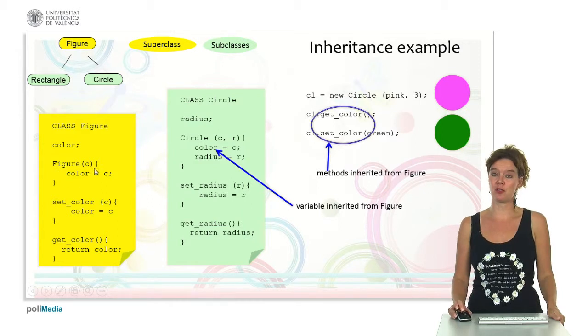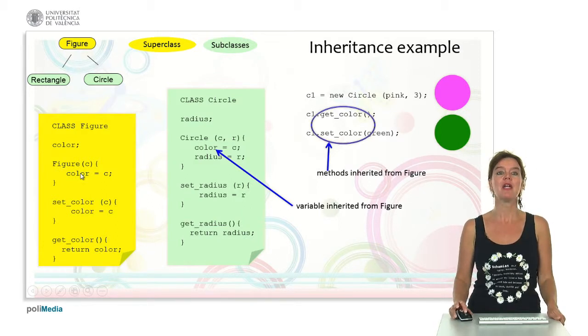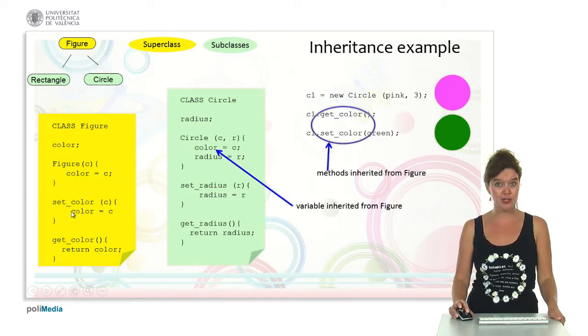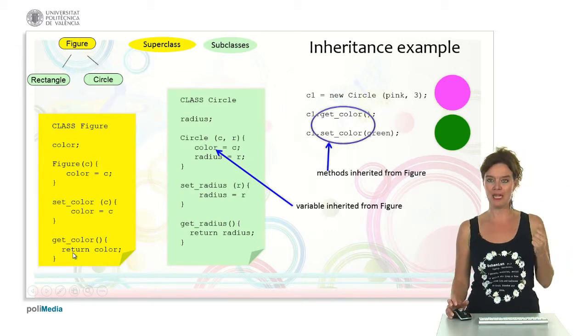So here we have a constructor. It enables to construct a figure with a specific color. And here we have a set color, a setter for setting the color and a getter for obtaining the color.